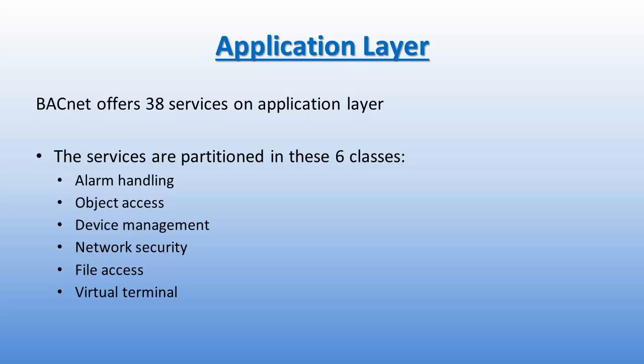At the application layer, BACnet uses objects and services to complete all its tasks. BACnet offers over 38 services. These services are partitioned into six classes: alarm handling, object access, device management, network security, file access, and virtual terminal. Some examples of these services would be read, write, change of value notification, and time synchronization.